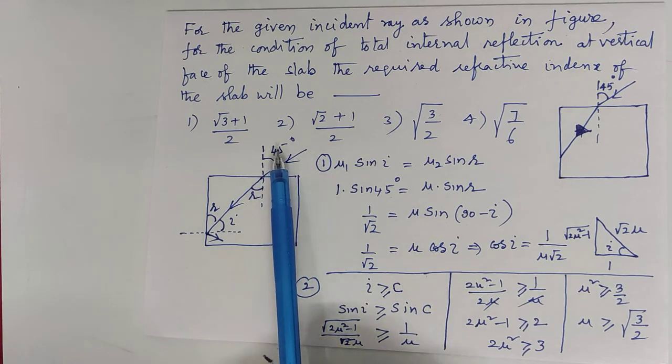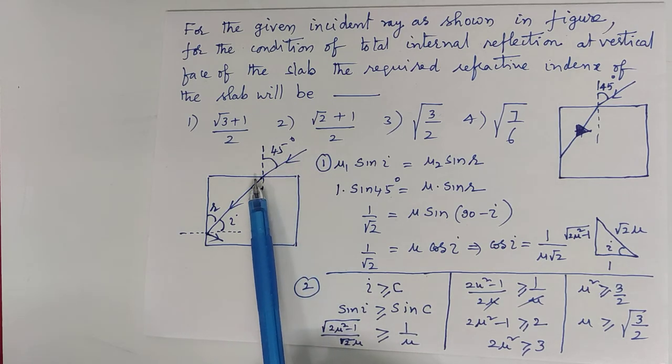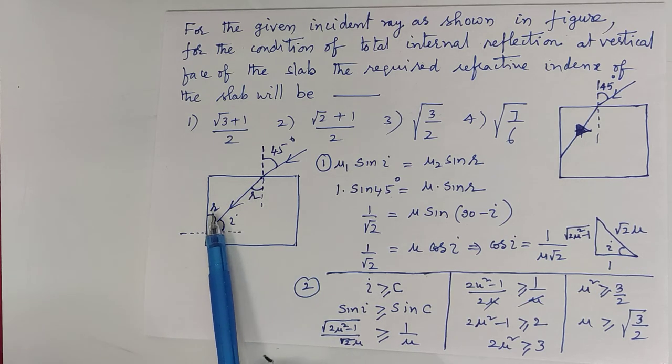Light ray is incident at 45 degrees angle. Light ray undergoes refraction. Angle of refraction is R. If this angle is R, this angle is also R. And here, the angle of incidence at the vertical surface is I.